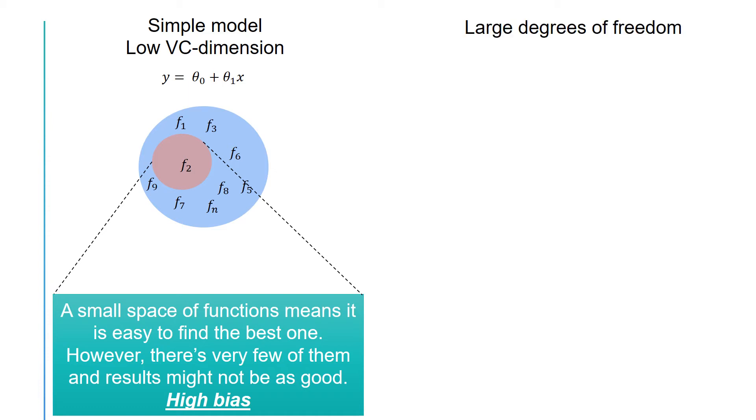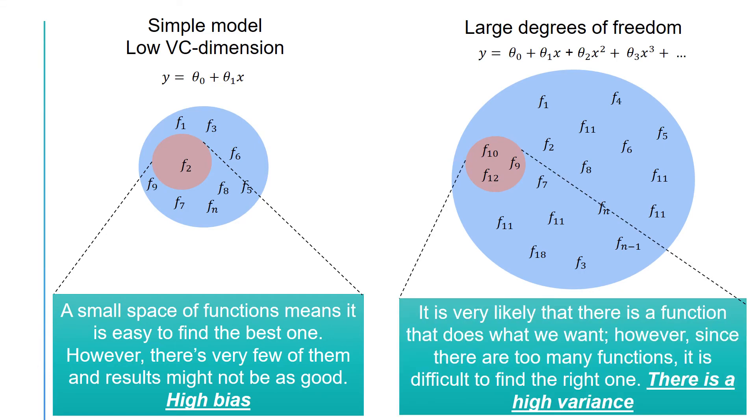On the other hand, in a big space with large degrees of freedom, it is very likely that the space includes a function that does what you want. However, since there are too many functions in the space, it might be difficult to find the right one. In other words, it could be hard to zoom in to find the correct function because the space is large and thus we could have high amount of variance.